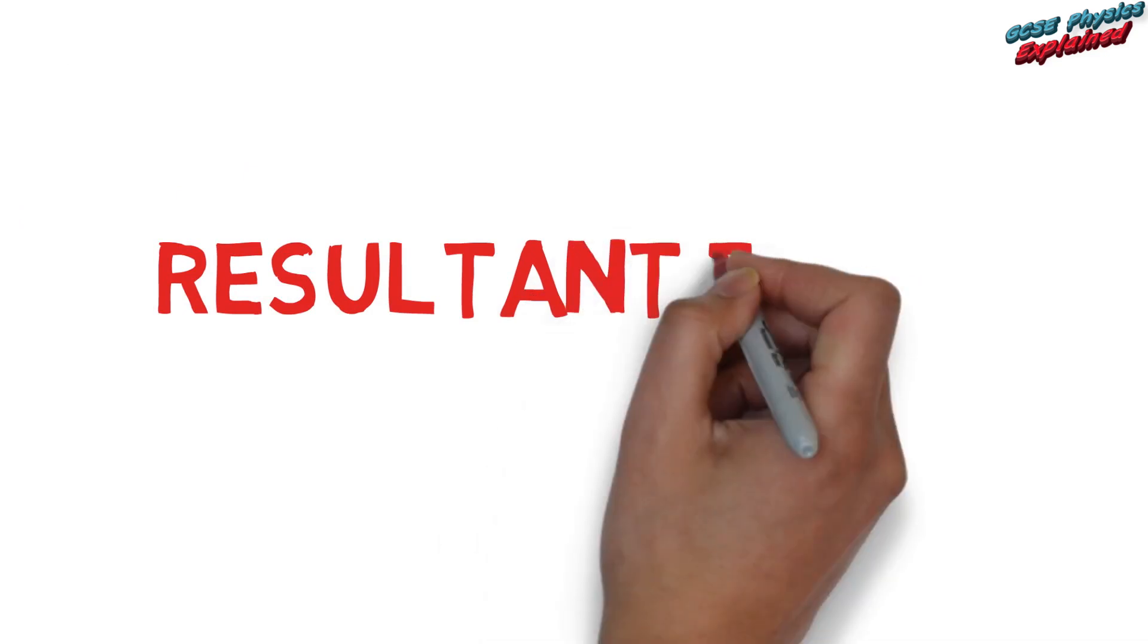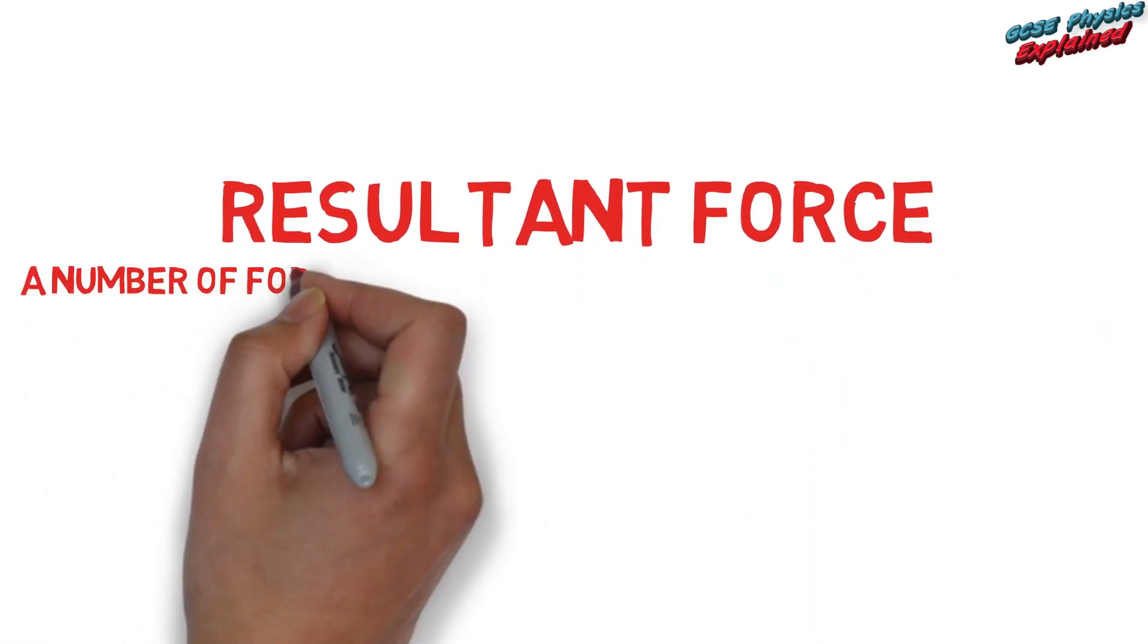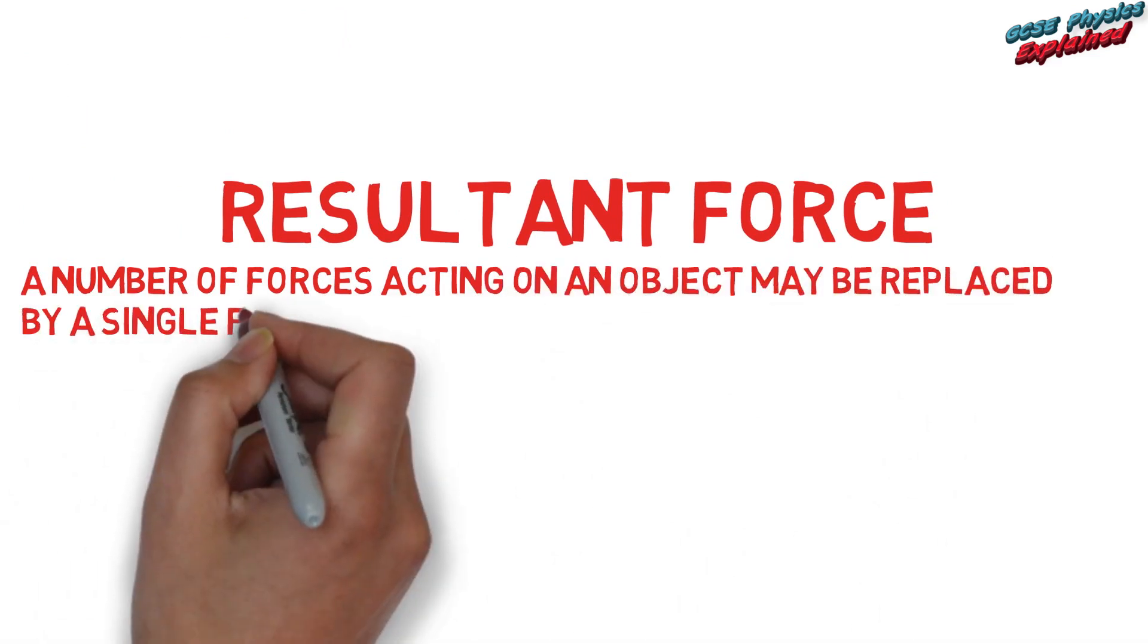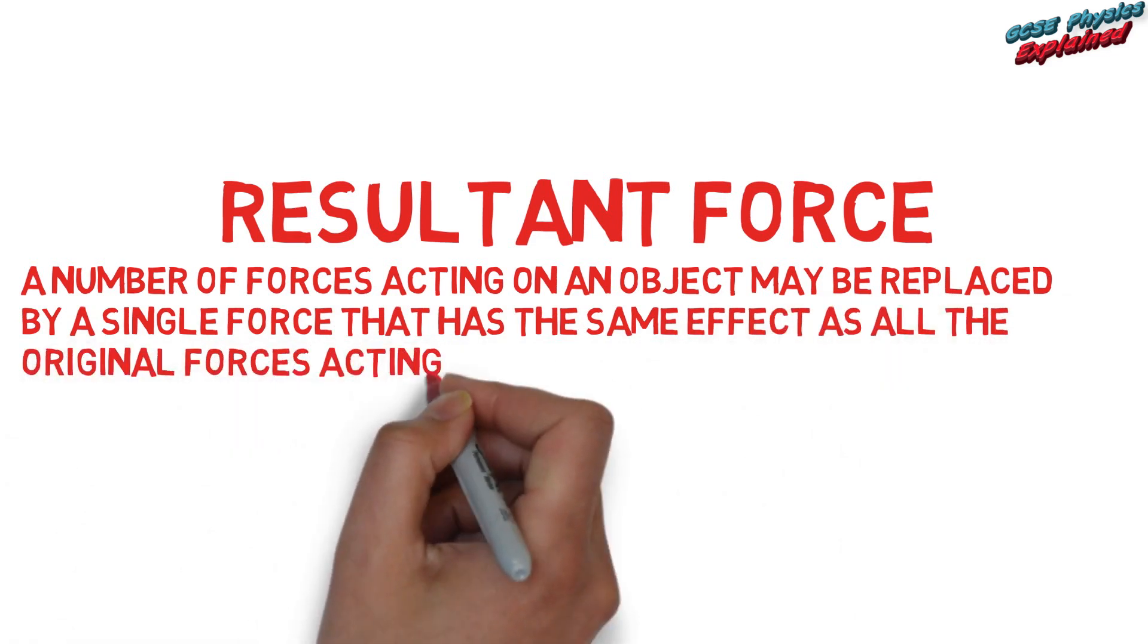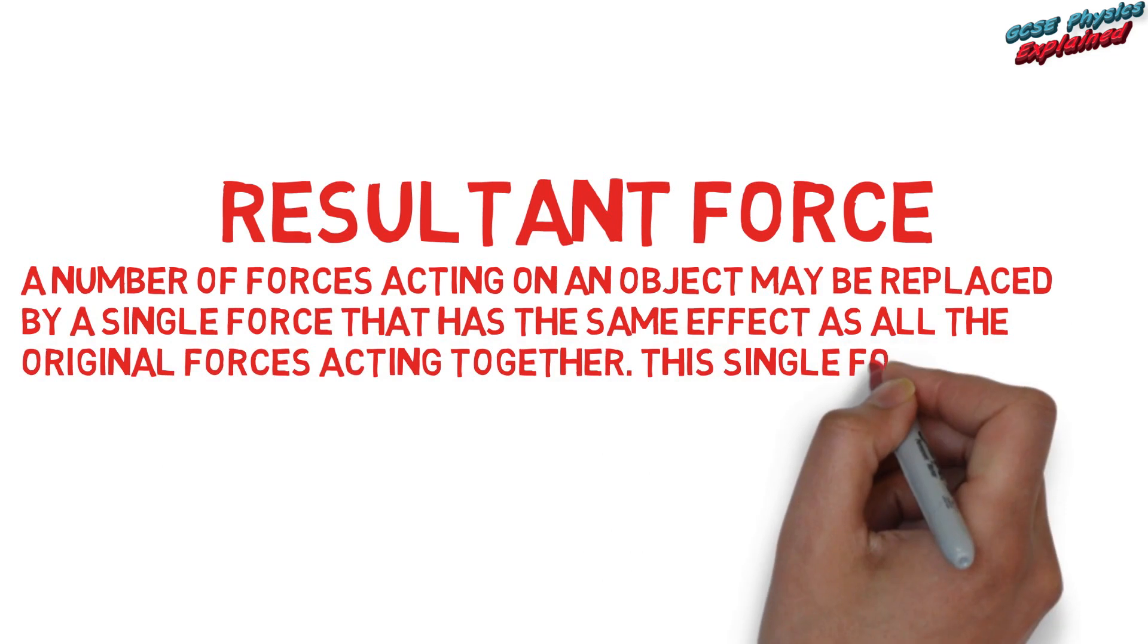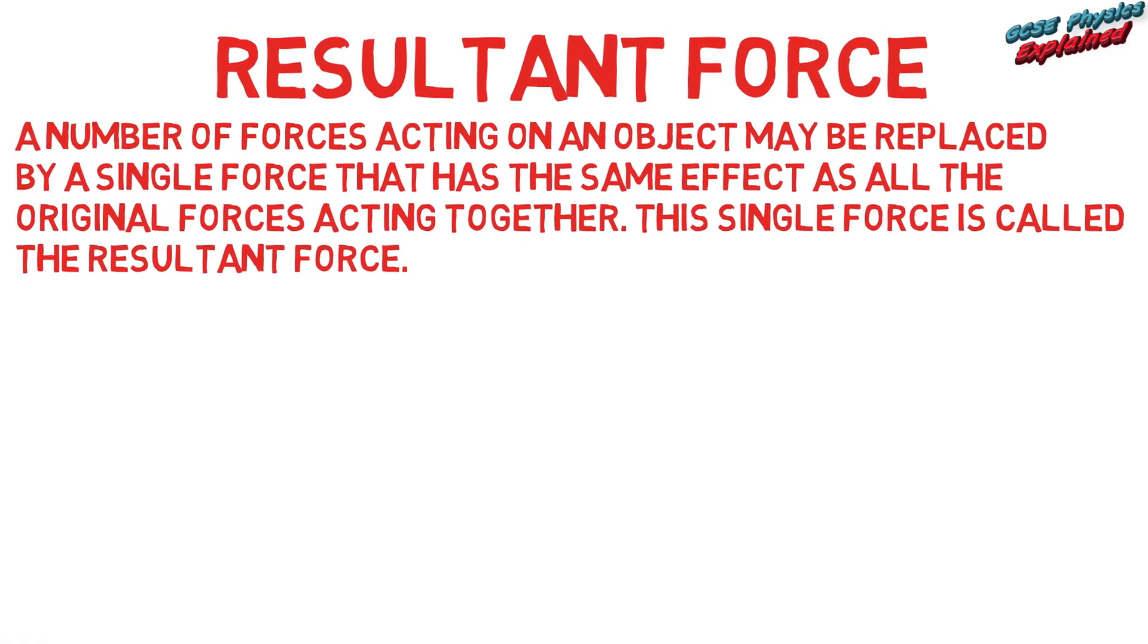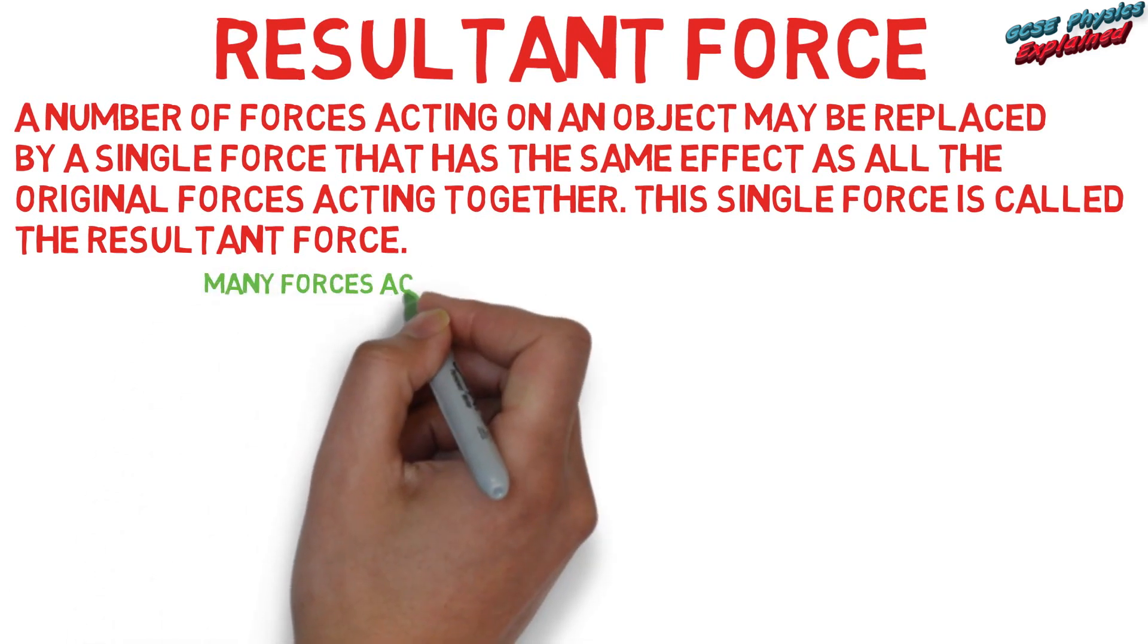Resultant force: A number of forces acting on an object may be replaced by a single force that has the same effect as all the original forces acting together. This single force is called the resultant force. Students should be able to calculate the resultant of two forces that act in a straight line. So here are some examples.